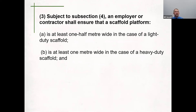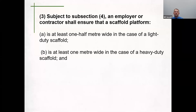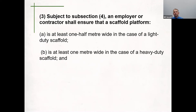Subsection three also addresses what the minimum platform widths are for your working platforms. For a light duty scaffold — supporting workers, tools, equipment, and current-use materials — the minimum width of the working platform is half a meter wide. If you are using it for stored and stacked materials on a heavy duty scaffold, the platform must be at least one meter wide.